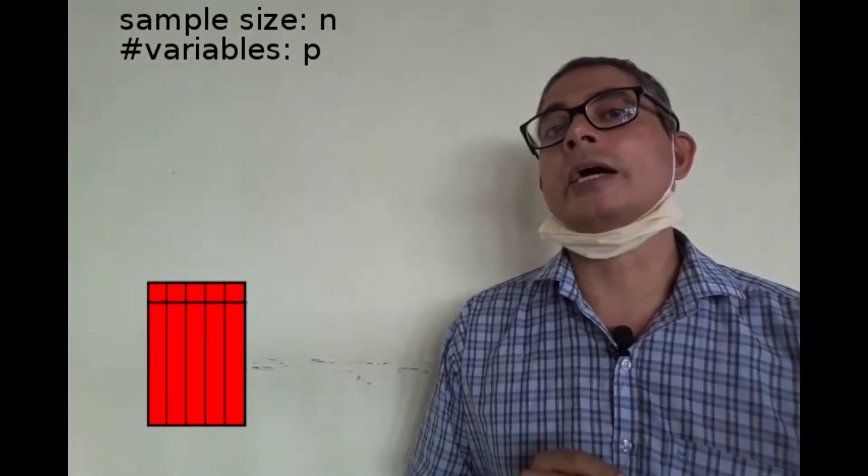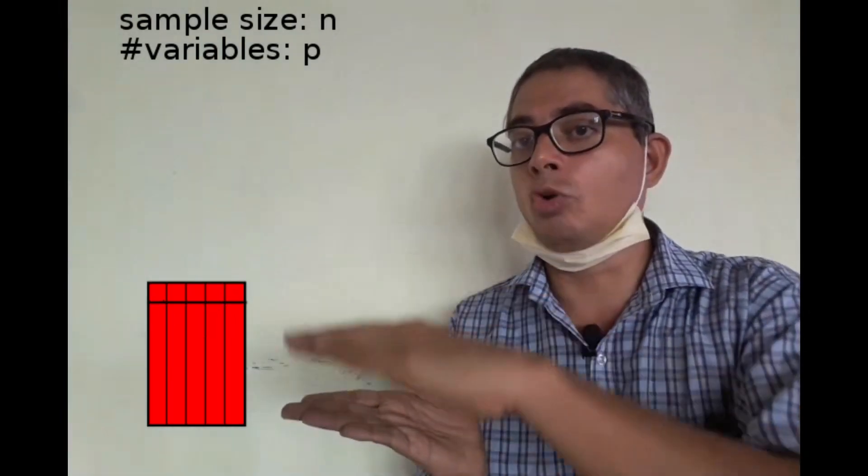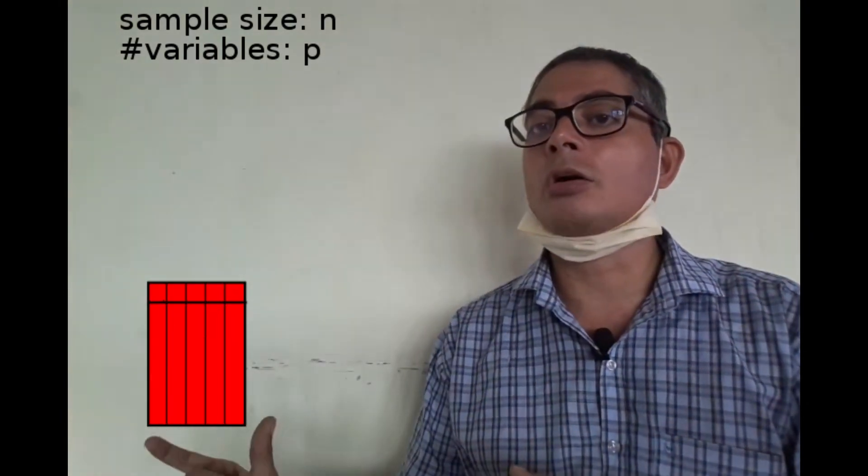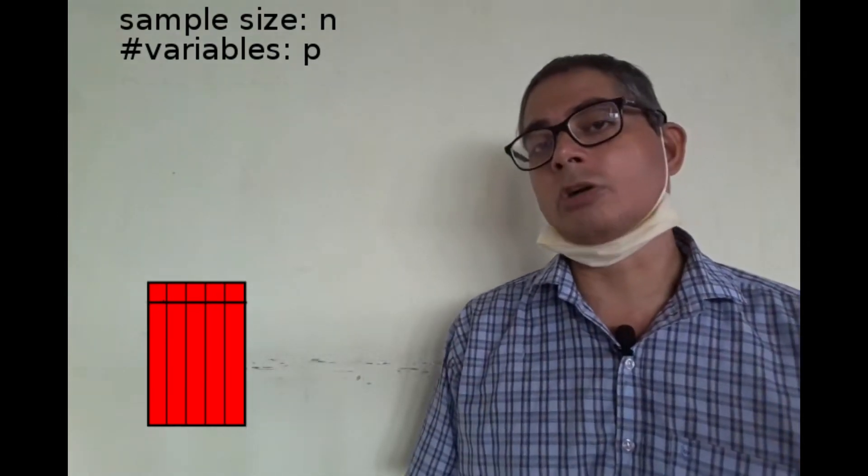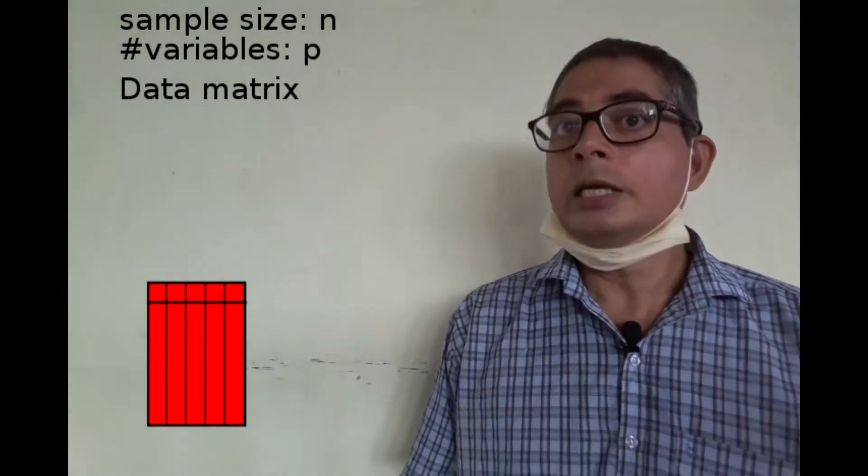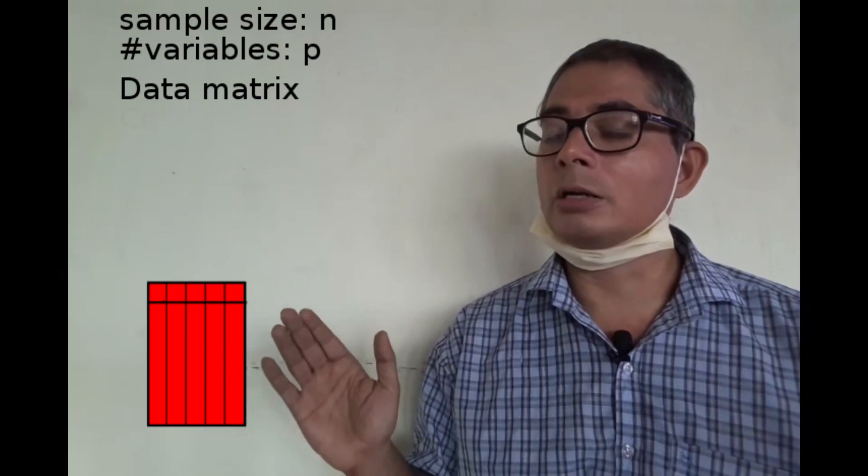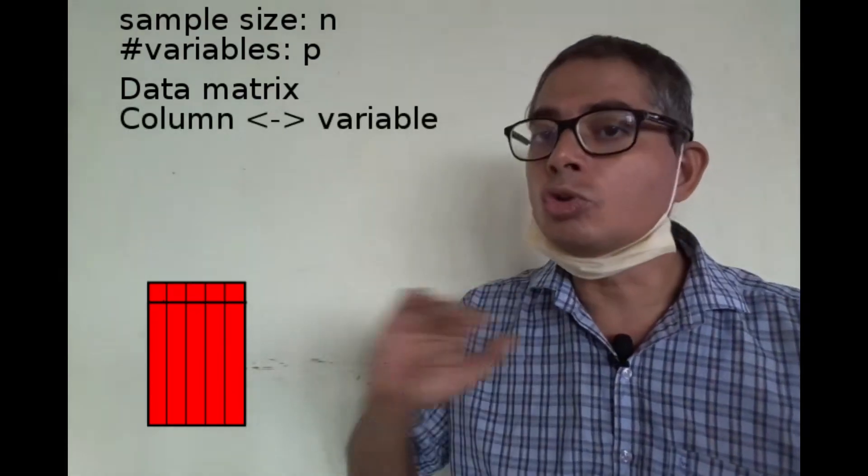It is customary to arrange all these values as an n by p matrix—that is, we have n rows and p columns. This matrix is called the data matrix. Each column corresponds to one variable and each row corresponds to a case.